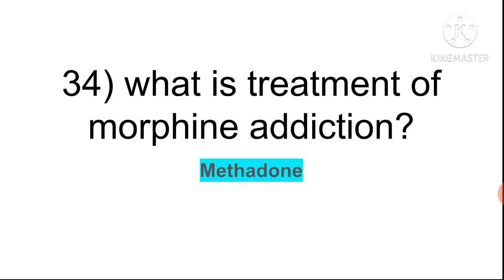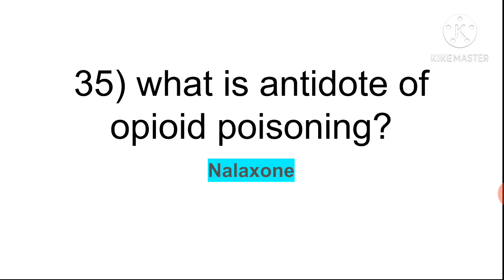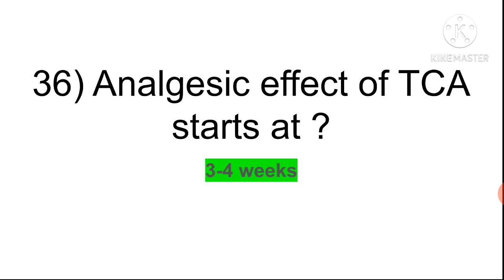Question thirty-four: treatment for morphine addiction or opiate addiction is methadone. If they ask for the antidote of opiate poisoning, the answer is naloxone. Differentiate: for addiction the answer is methadone; for opiate poisoning the answer is naloxone.